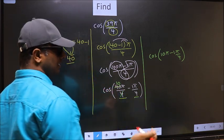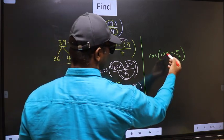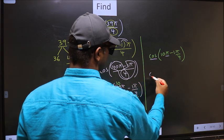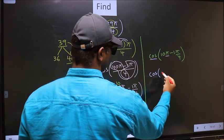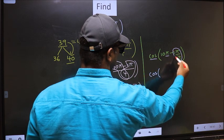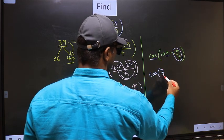Next, here we have pi. So cos is not going to change. It will remain cos. And inside, we get this angle: pi by 4.